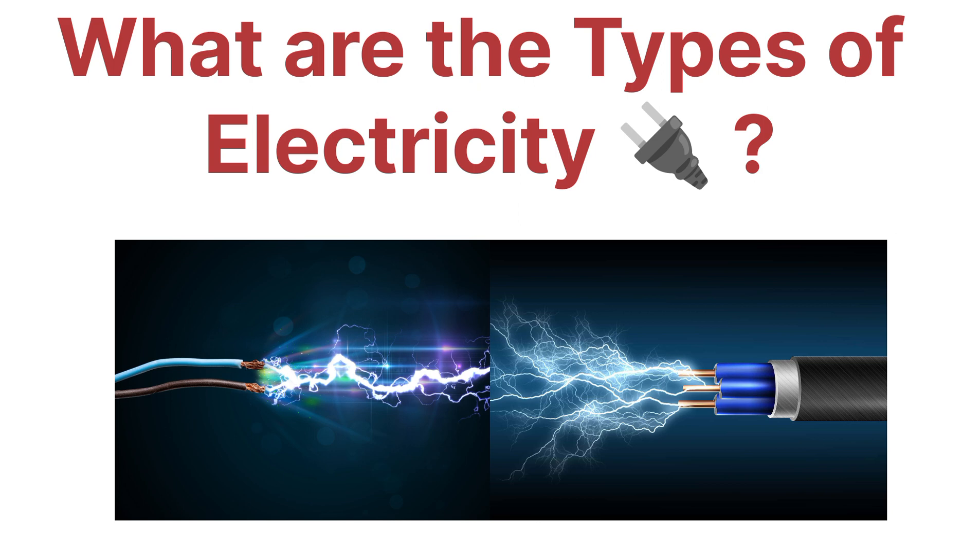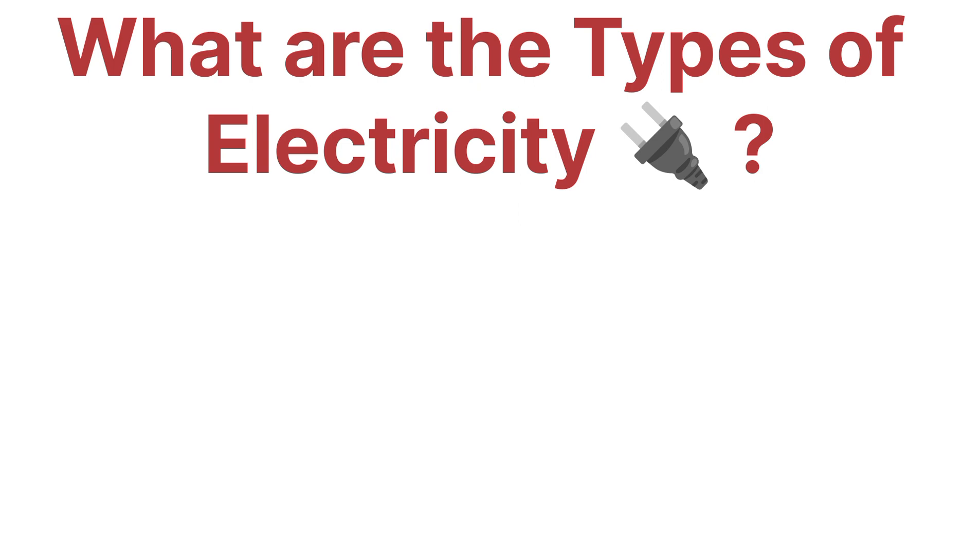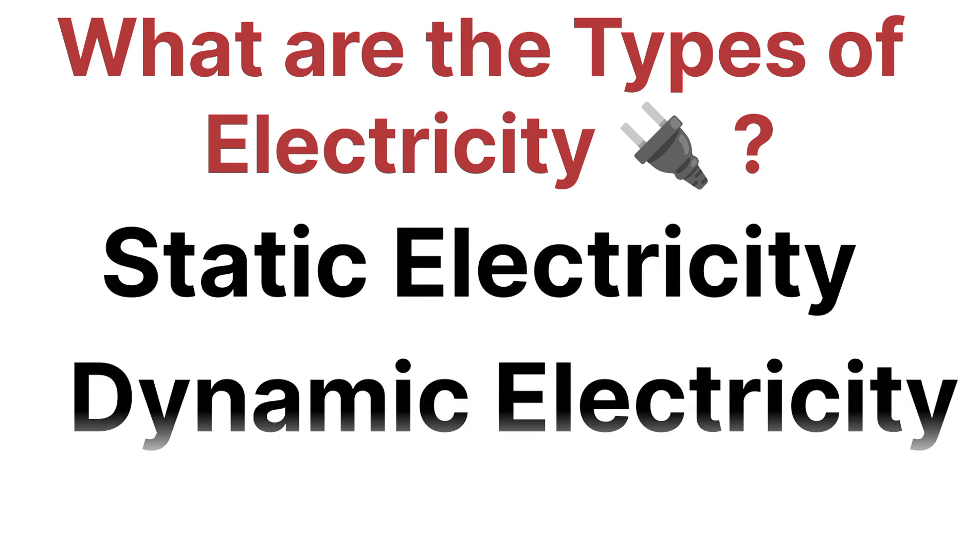Basically there are two types of electricity. The first one is static electricity and the second one is dynamic electricity. What are static and dynamic? Let's see one by one. First of all, let's see what is static electricity.